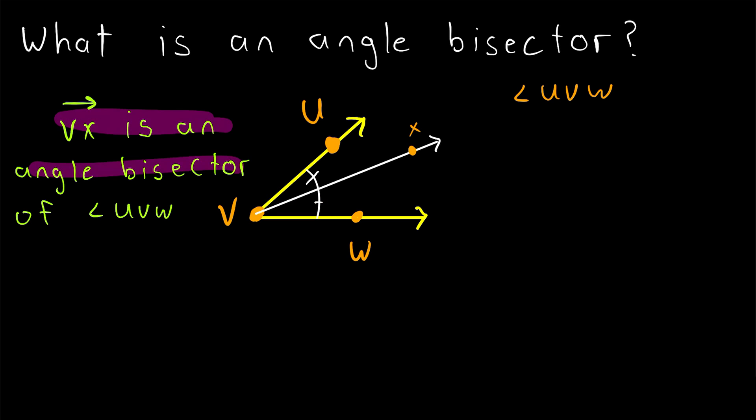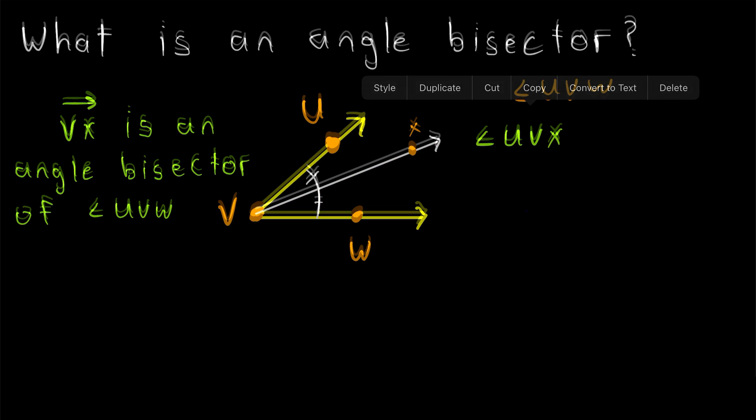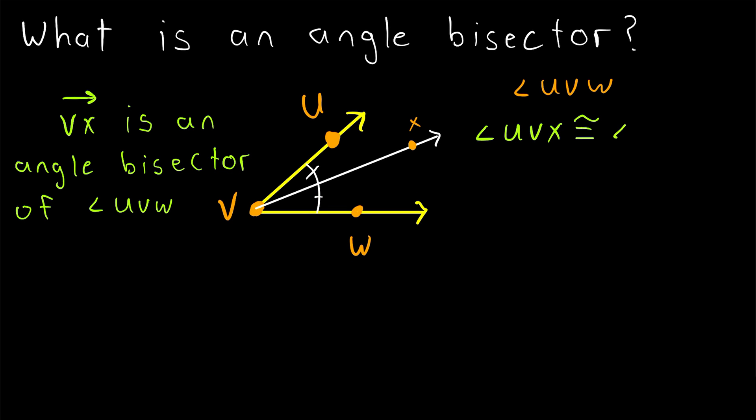So if the ray VX is an angle bisector of UVW, then we could write that the angle UVX, that's this one here, is congruent, written like that, is congruent to the angle XVW, this angle here.